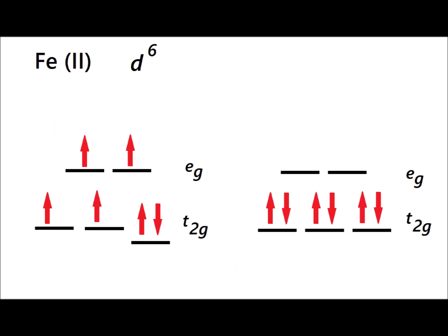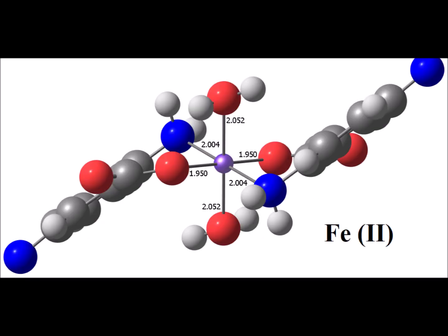The second metal we tested was iron two plus, which is a d6 metal. So on the left-hand side, we have the high-spin octahedral with a Jahn-Teller distortion. On the right-hand side, we have the low-spin octahedral. Experimentally, there turned out to be no unpaired electrons. So it is definitely low-spin, strong-field octahedral.